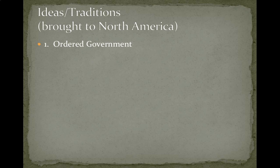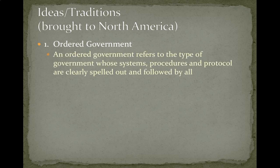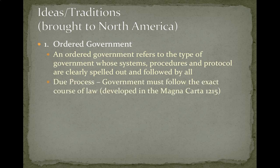The first idea we have when creating our governments is the idea of ordered government. An ordered government refers to the type of government whose systems, procedures, and protocol are clearly spelled out and followed by all. The first concept here is due process, where the government has to follow an exact course of law, which means everyone knows the rules. In the United States, it's not arbitrary — the rules around filing charges and court proceedings are all established.